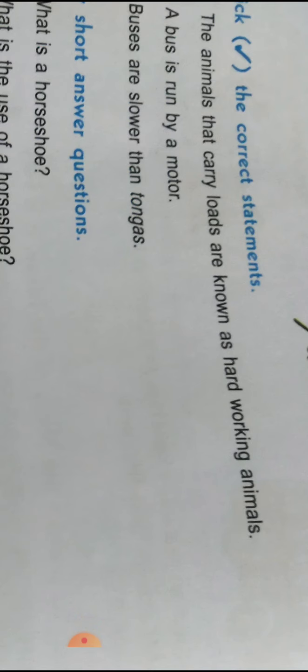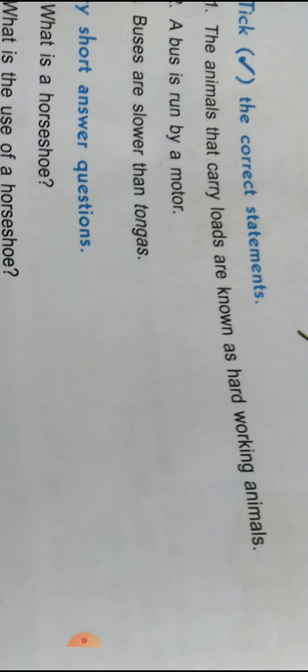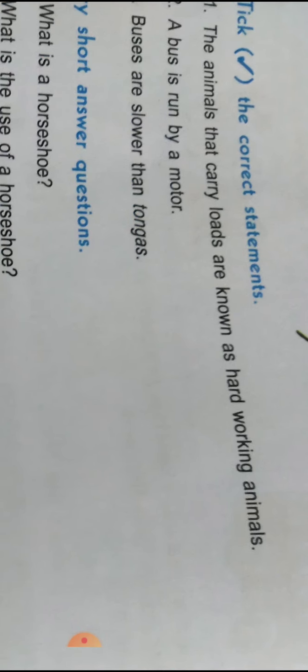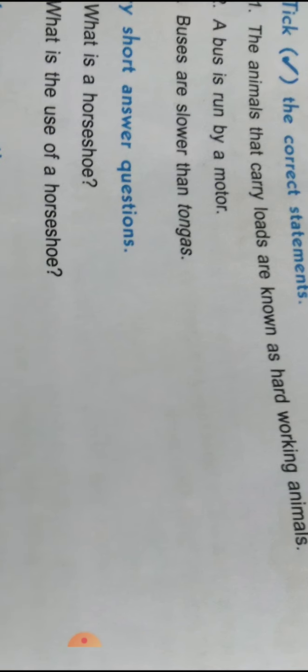Next: 'A bus is run by a motor.' Bus जो है, run चलती है motor के द्वारा, तो यह statement सही है। Next: 'Buses are slower than tangas.' Buses जो है, tanga से बहुत slow चलती है — यह गलत है statement, इस पर cross करेंगे।